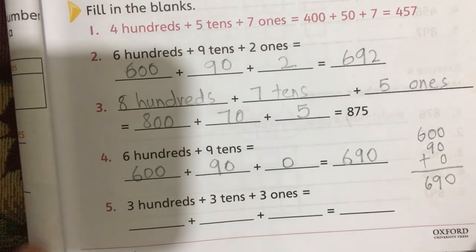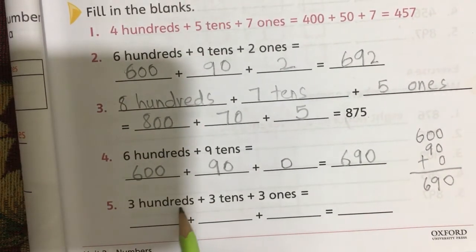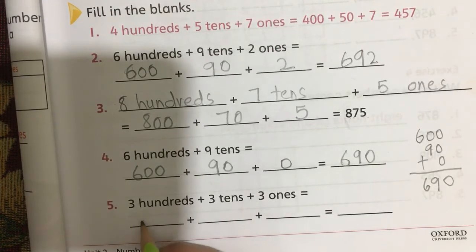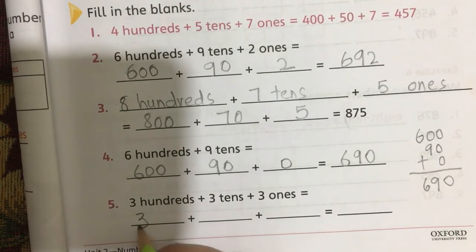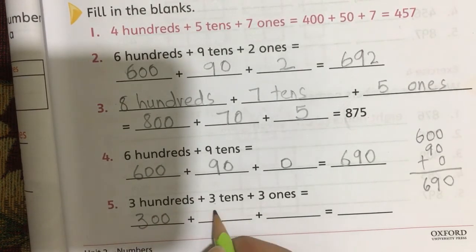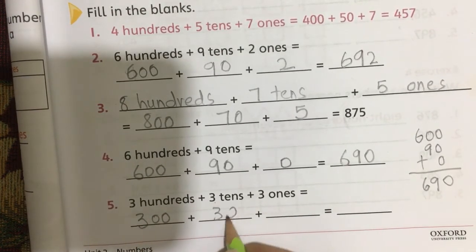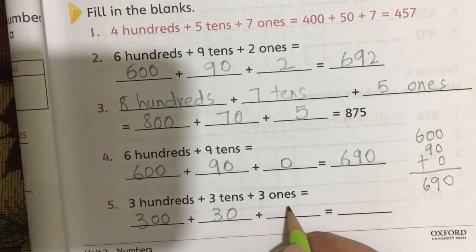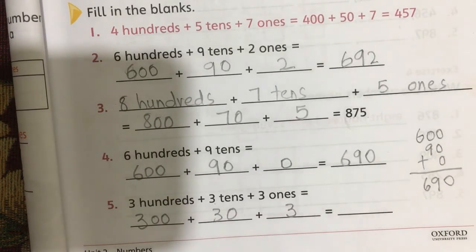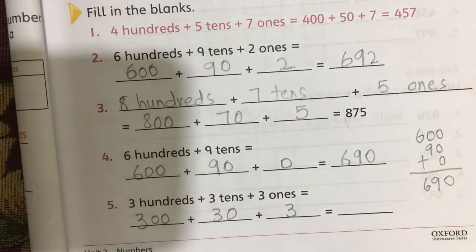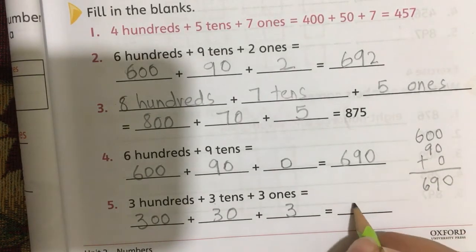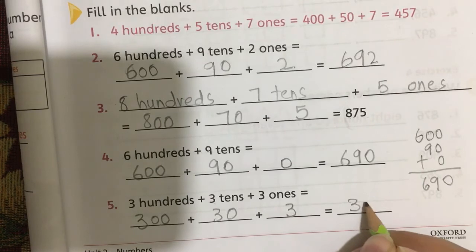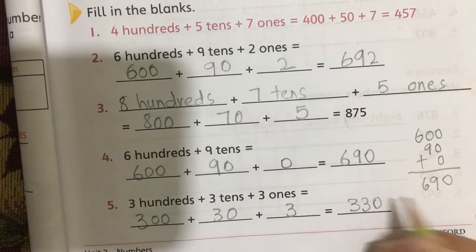The last question is three hundreds, three tens meaning thirty, and three ones meaning three. When we add these three numbers, it becomes three hundred and thirty-three.